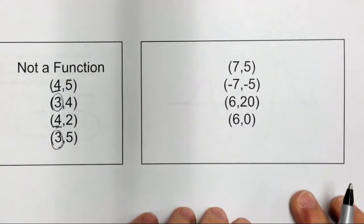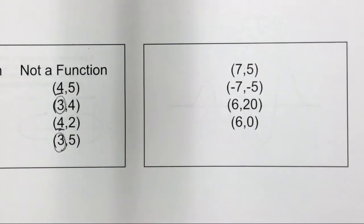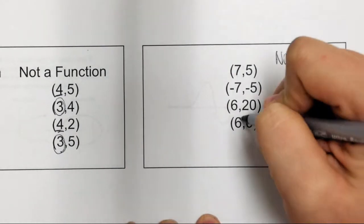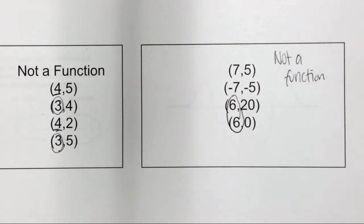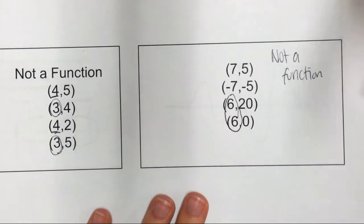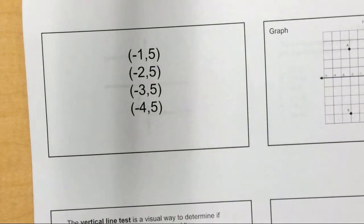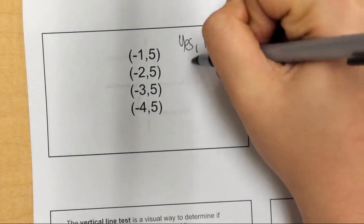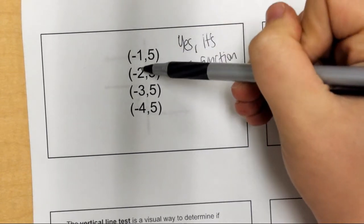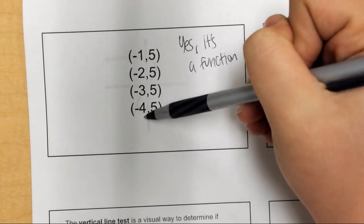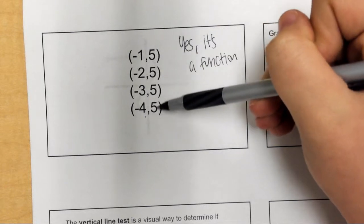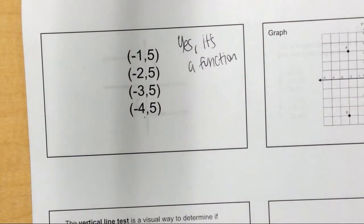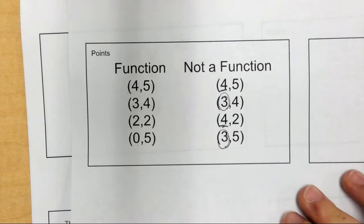Look at these points — do they make a function? Hopefully you said no, this is not a function because the sixes repeat, meaning an input goes to two different outputs. Now look at this next set — is it a function? Yes, it's a function because each x value is different and unique. It's okay that they all go to five, but what's not okay is x values repeating. Jot these down or write your own examples in your notes.